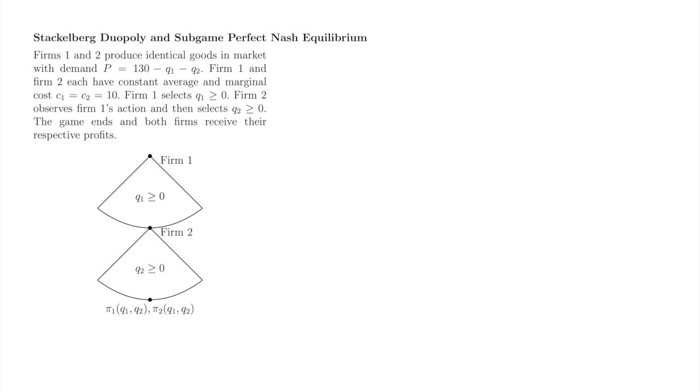Firm 2 observes q1. Firm 1 knows firm 2 observes q1. Firm 2 knows firm 1 knows firm 2 observes q1, etc. This tree looks a little bit different from the trees we've seen up to this point. Instead of finitely many actions at each move, Stackelberg's game features infinitely many actions at each move. We represent these action spaces by drawing a single node with a wedge, and labeling the wedge with the action space.